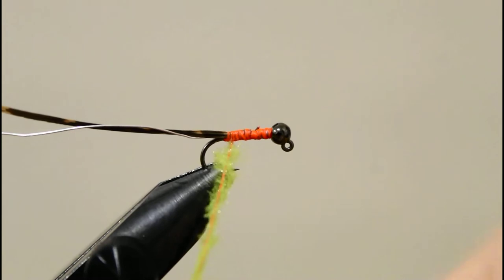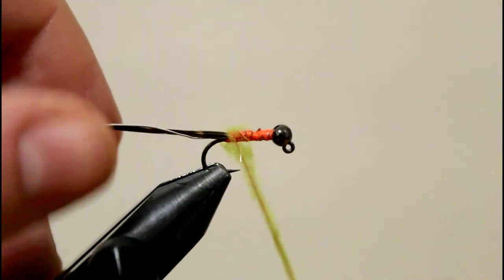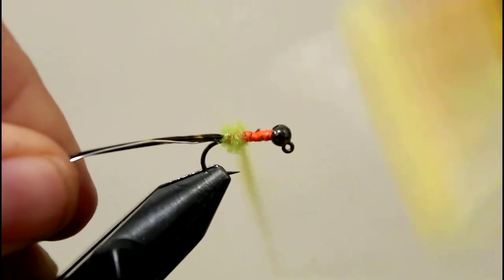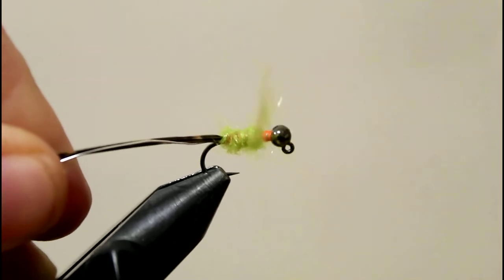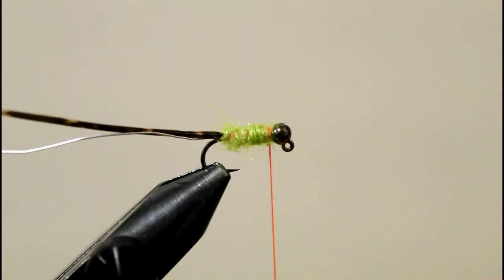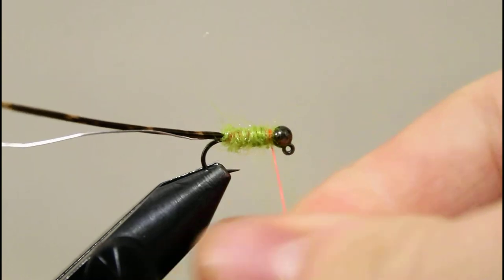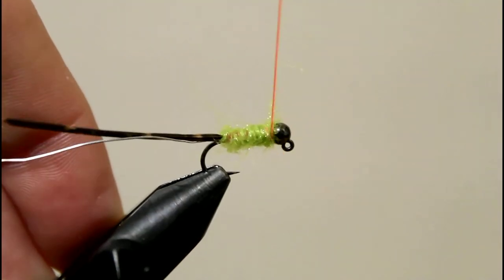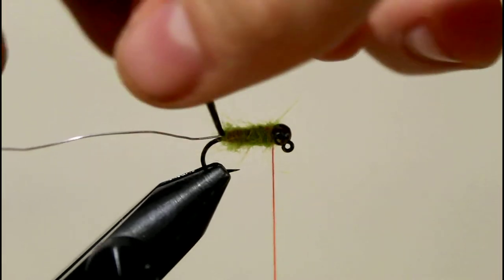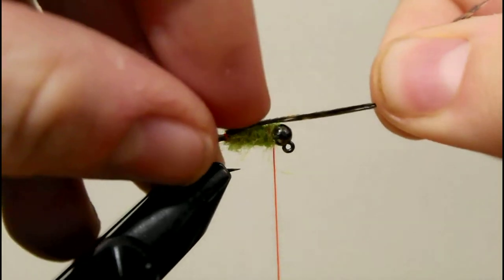I'm gonna take wraps forward, trying to make a little bit of a thicker body. I want to make sure I can get all the way up to behind that bead. I'll add just a pinch more. Just making sure it's all the way up to the back of that bead there. I'm gonna take my turkey, fold it over, and get a couple wraps on that—one, two—and then we'll cut that off.